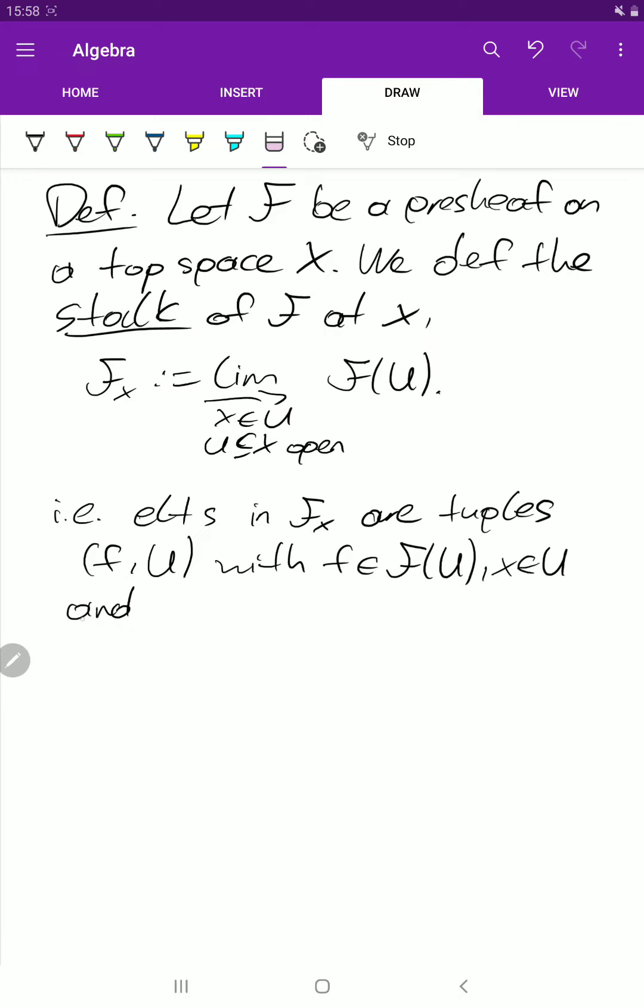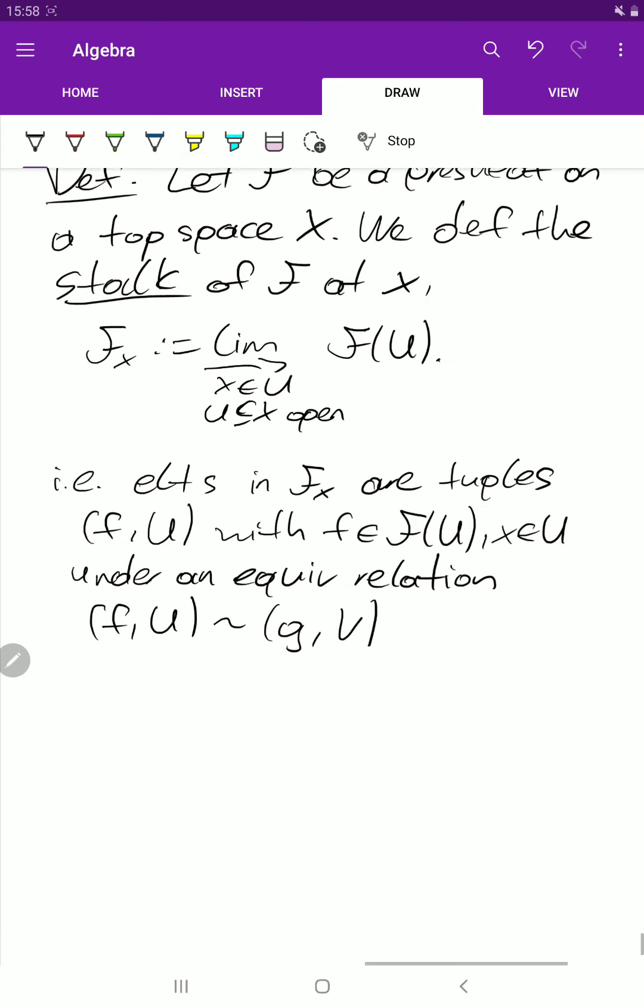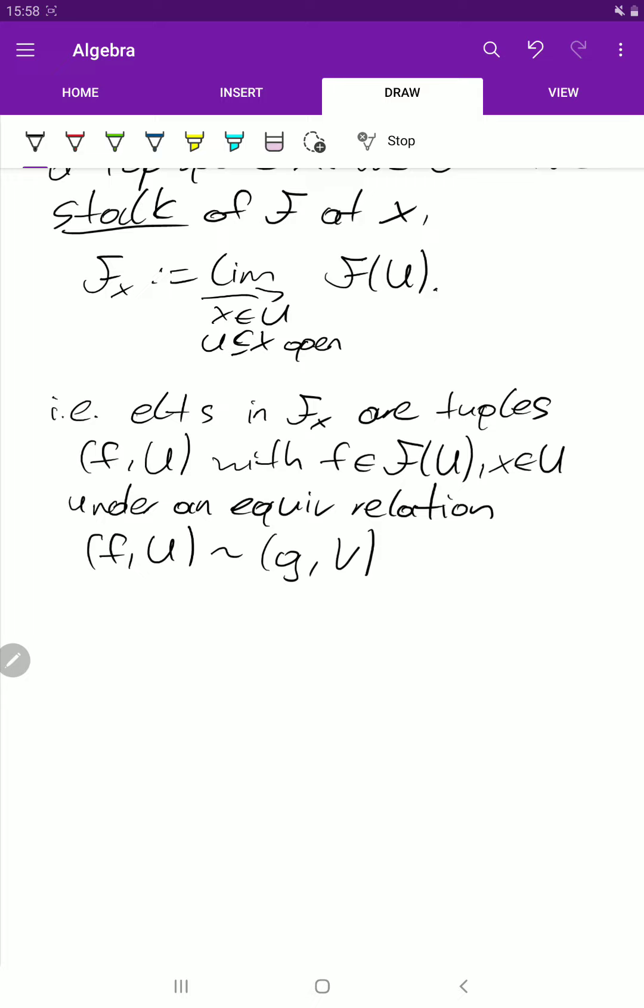Under an equivalence relation, namely (f, U) is equivalent to (g, V), where of course x has to be in U and V.